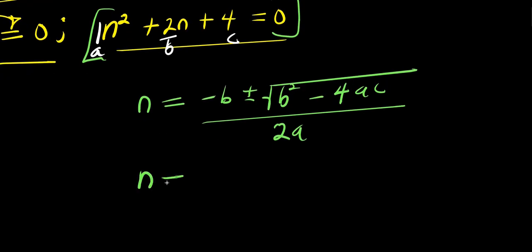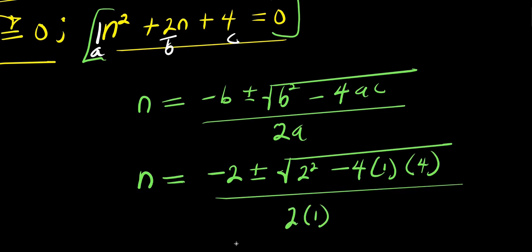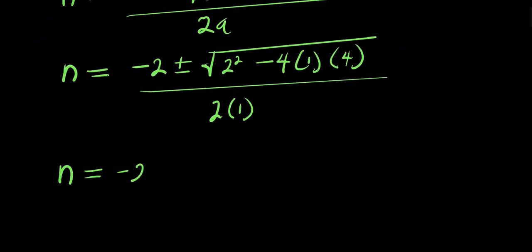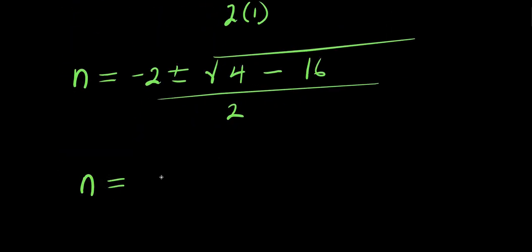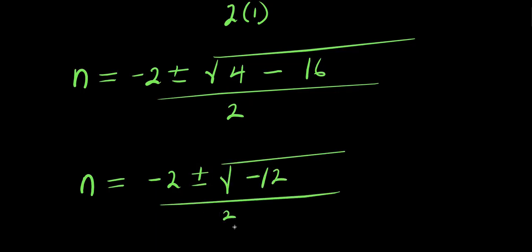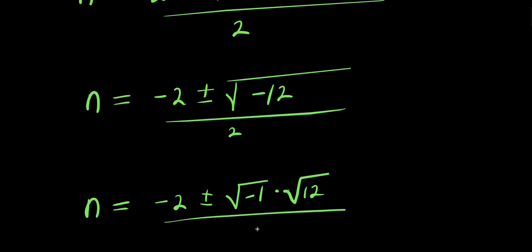Inserting the values for a, b, and c: n equals negative 2 plus or minus square root of 2 squared minus 4 times 1 times 4, divided by 2 times 1. This gives n equals negative 2 plus or minus square root of 4 minus 16, divided by 2. That is negative 2 plus or minus square root of negative 12, divided by 2. We can write this as negative 2 plus or minus square root of negative 1 times square root of 12, divided by 2.